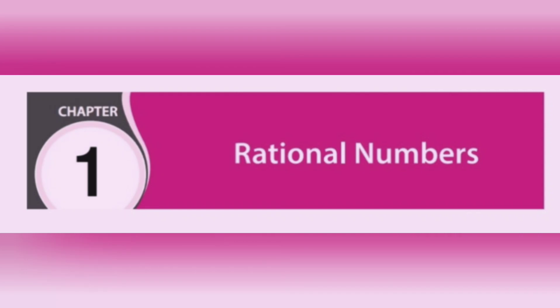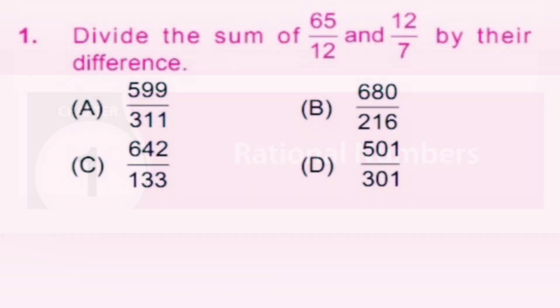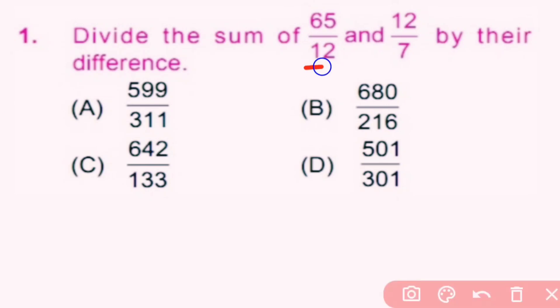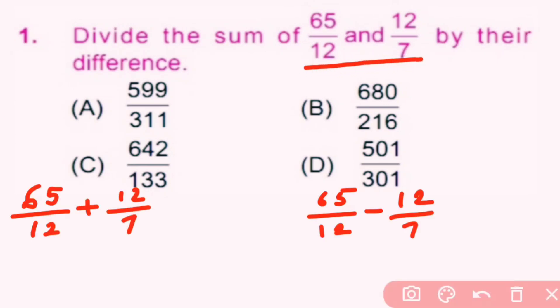Let's start with Question 1: Divide the sum of 65/12 and 12/7 by their difference. We first find out the sum and difference. For addition and subtraction, the denominators should be the same, so we will make them the same by multiplying numerator and denominator accordingly.